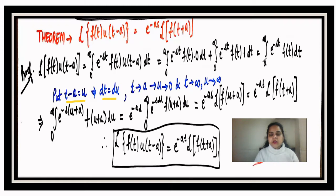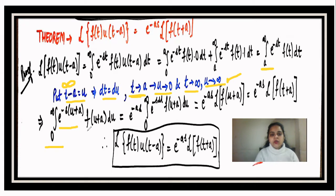When t = a, u = 0; when t → infinity, u → infinity. Making these substitutions, the limits become zero to infinity, the exponent becomes e^(-s(u + a)), and f(t) becomes f(u + a). Since e^(-as) is a constant with respect to u, it is taken out of the integral.